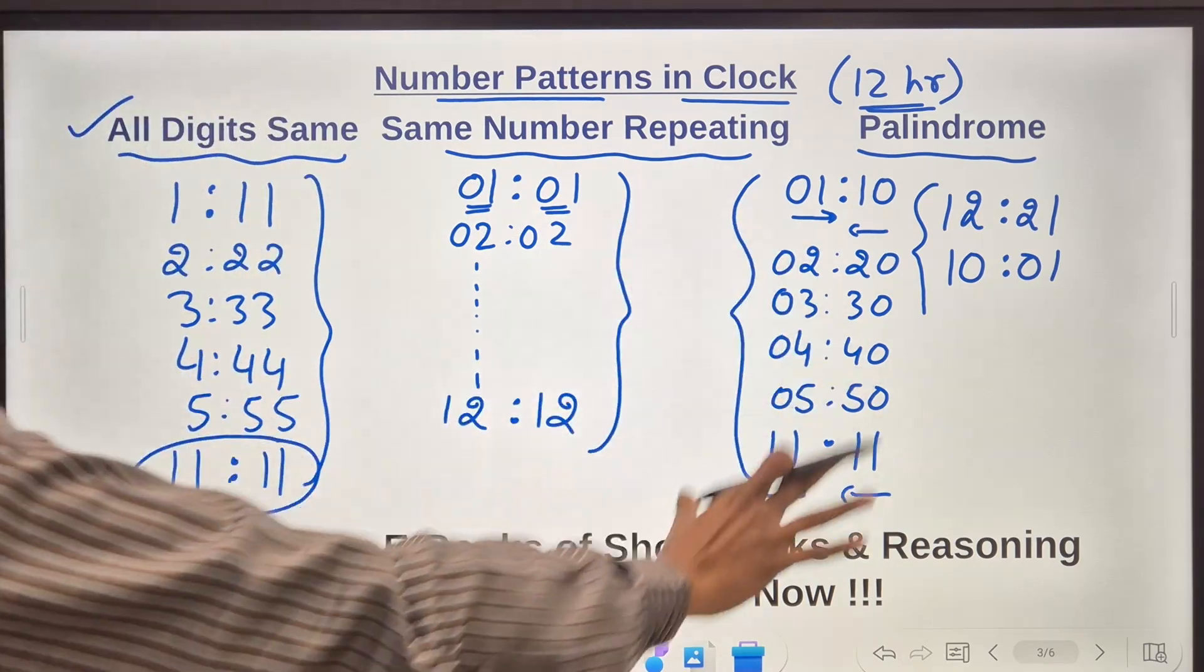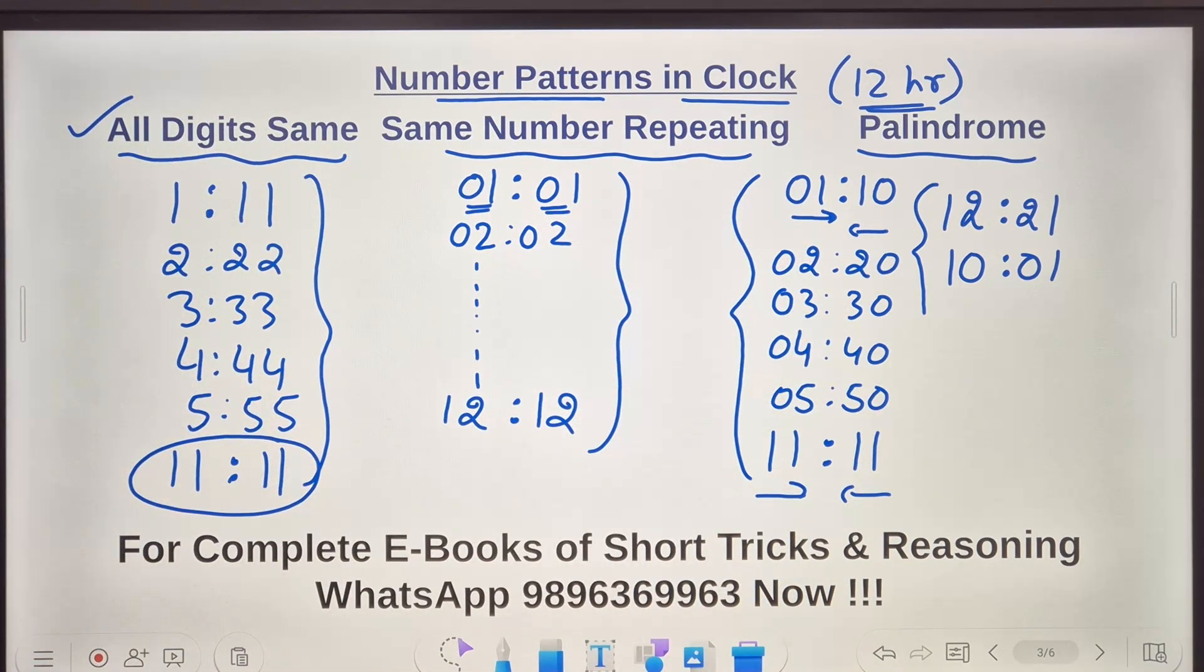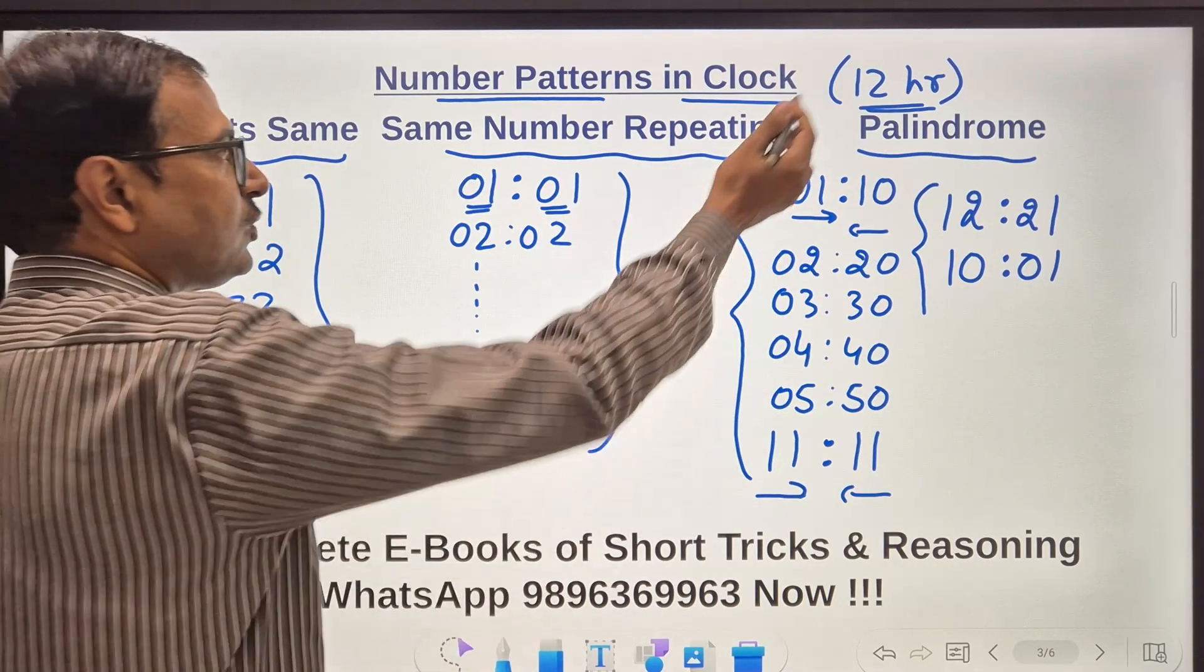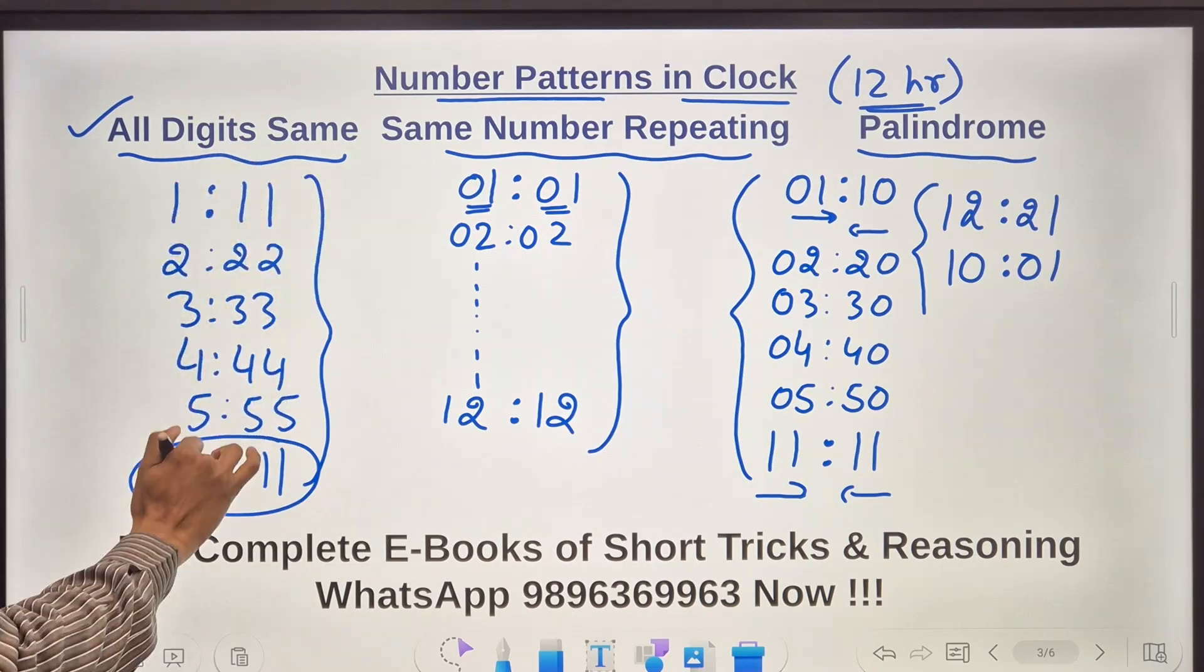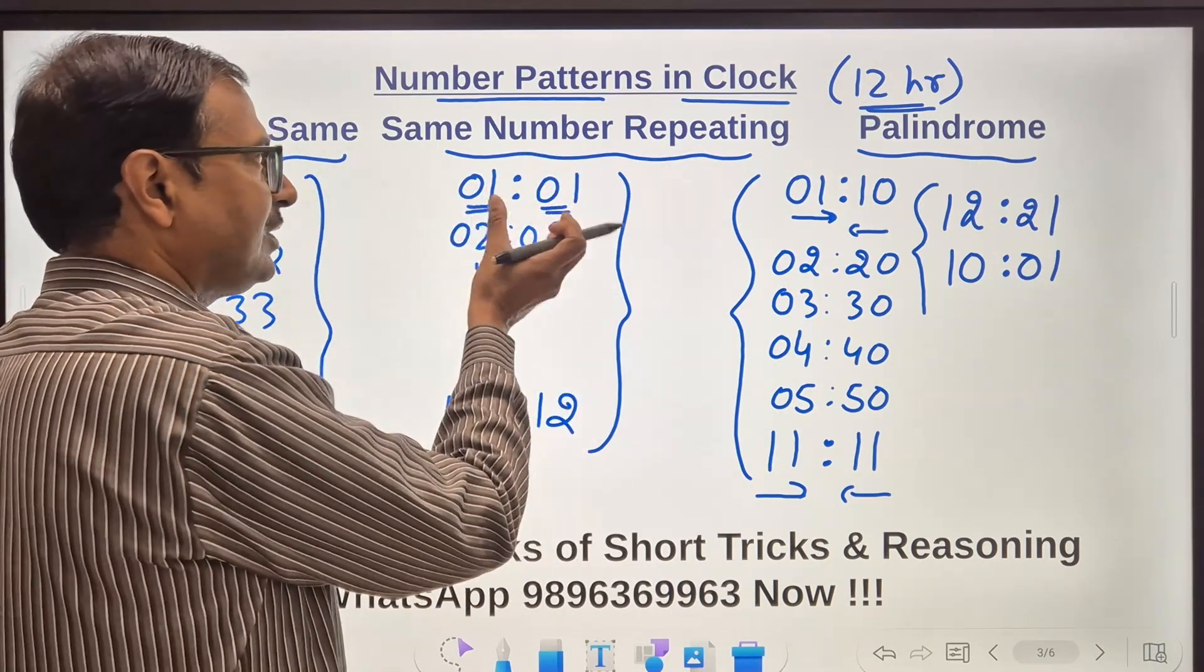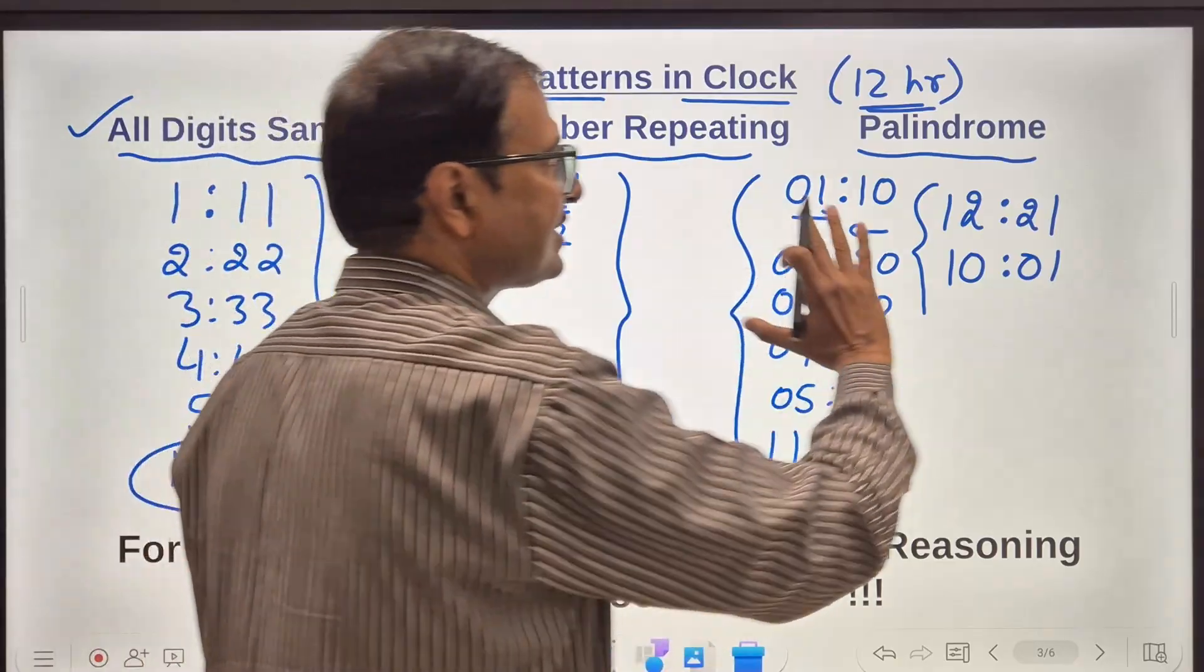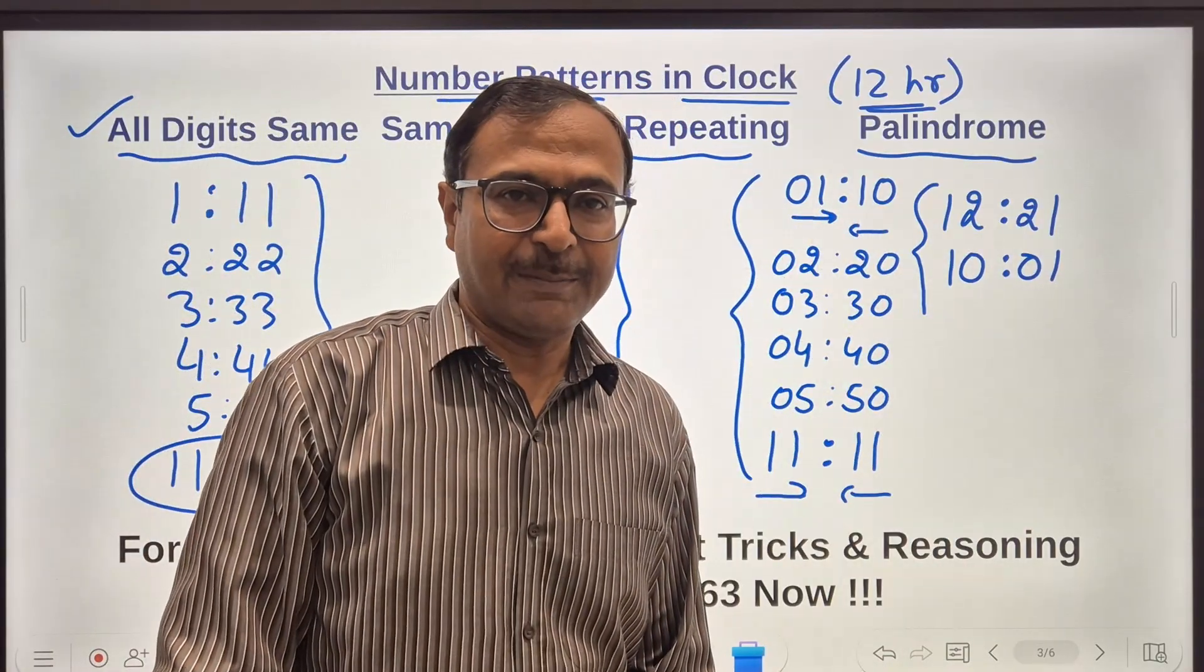So you can see such beautiful patterns, such beautiful numbers obtained on the face of a clock when you consider a 12 hour period. Some of them are all digits are same, some of them the same numbers they repeat and then some of them are palindromic numbers.